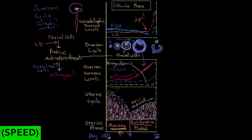The granulosa cells are cranking out estrogen and actually start producing two more hormones in higher amounts: a bit of progesterone, and a hormone called inhibin. There are two types — inhibin A and inhibin B — but we'll consider them as one. Inhibin's role is to inhibit FSH release from the anterior pituitary. You can see that as inhibin starts to increase, FSH starts to decrease, because inhibin is stopping the anterior pituitary from releasing FSH.